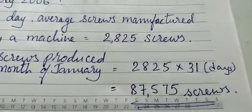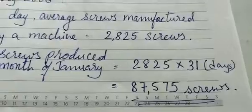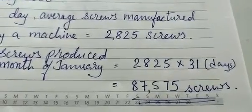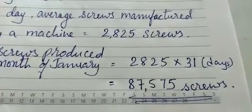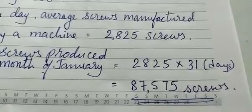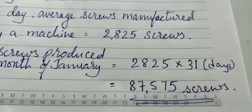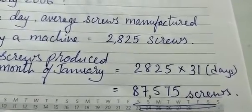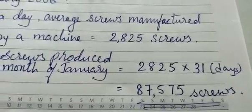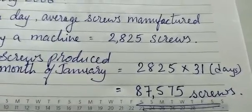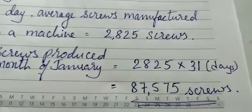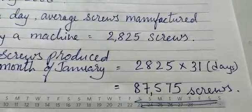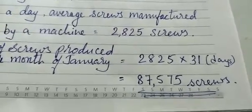Number of screws produced in the month of January is equal to 2,825 multiplied by 31 days. I need not show you the multiplication — you have to do it in the notebook as a fair calculation under the steps itself. The answer is 87,575 screws.